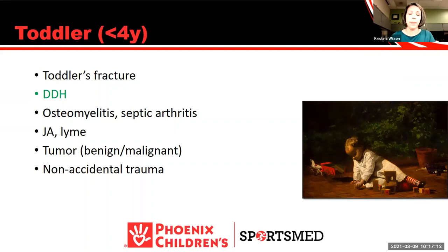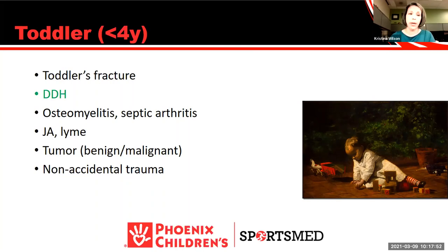When looking at differentials for antalgic or abnormal gait, I like to break it up by age, because many conditions are more common in certain age groups. In training, everyone focuses on the newborn exam for developmental dysplasia of the hip (DDH), which isn't relevant to a sports medicine doctor — but about 10% of DDH cases are missed in infancy, and it's a very common diagnosis. When 10% is missed, these patients will come into our clinic, often in the toddler phase. The younger the patient, the better the long-term prognosis.